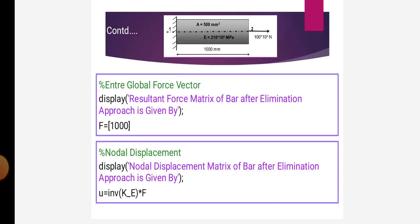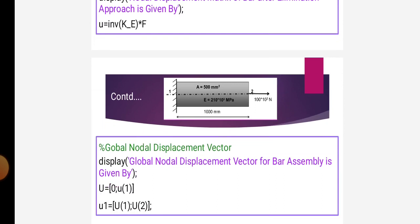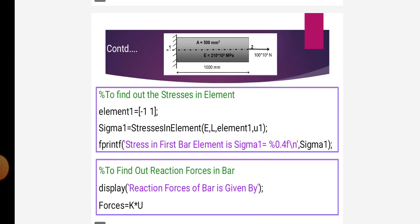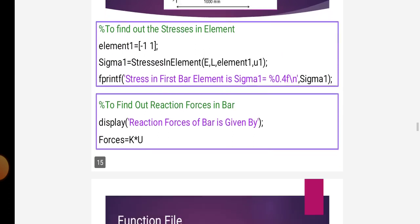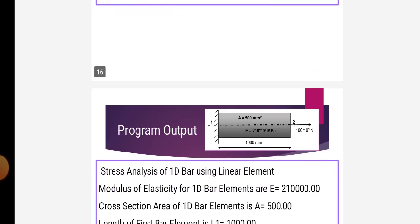In the next step, we enter the global force vector, so force is equal to 1,000. In the next steps, the nodal displacement is calculated. Also, the global nodal displacement vector is given. We also find the stresses in this element using the MATLAB program, and we find the reaction forces in the bar. All these functions are used for calculation of stresses in individual elements.